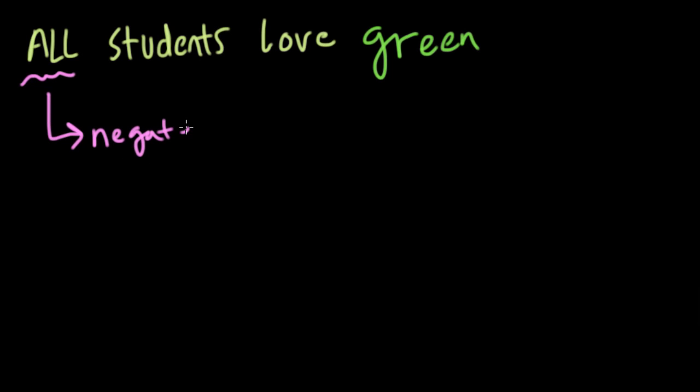Essentially what happens when you negate an all statement is it becomes a some statement because you could negate this by saying, well, no, not all students love green. Some students do not love green. That's the negation because here you're saying some students.